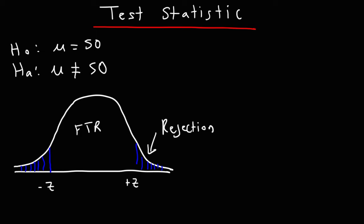Now, let's say we're dealing with a 95% confidence level. You could use the standard Z table to get the Z values. At a 95% confidence level, the critical values will be 1.96 on both sides. In order to know whether you should accept or reject the null hypothesis, you need to get a calculated Z value and compare it to your critical value.